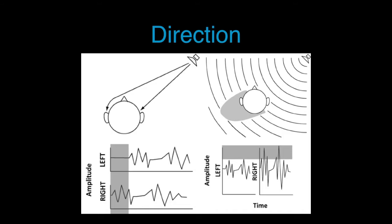If we're working with a stereo mix, we create direction by turning up the sound in one speaker and turning it down in another, and vice versa. In different technologies like binaural or ambisonics, there's more information that we can present to the ears.